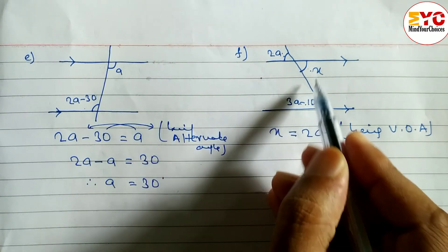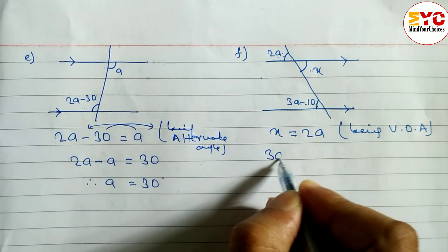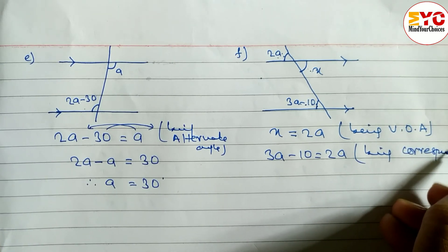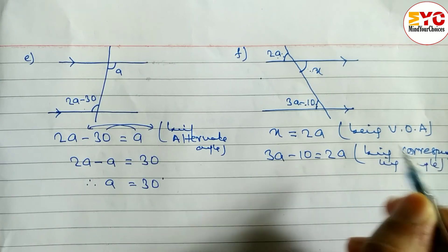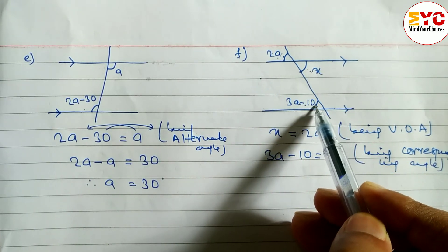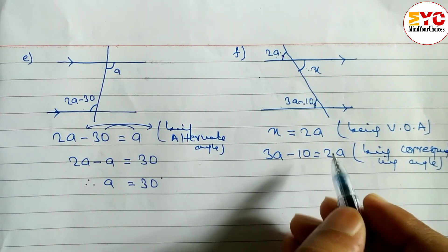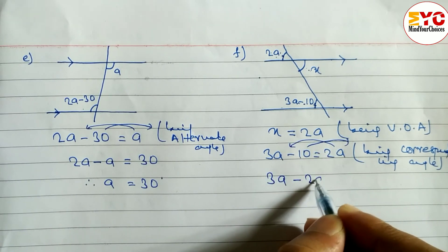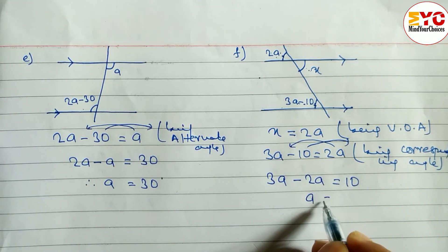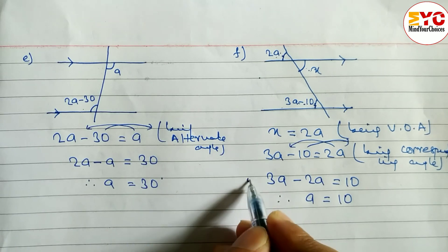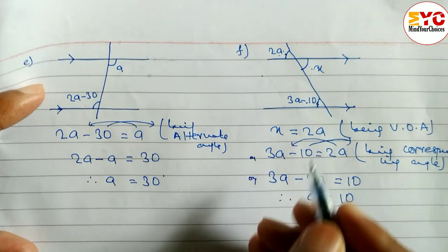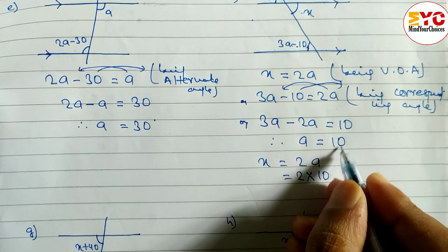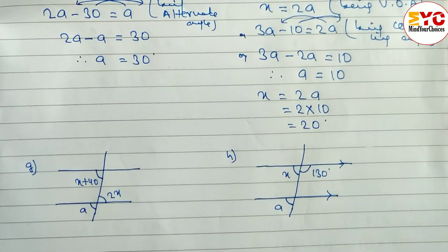For this question, we take these two angles — this and this are corresponding angles, so 3a − 10 = 2a. Reason: being corresponding angles. One angle is outside and one is inside the two parallel lines. Solving: 3a − 2a = 10, so a = 10. Now find x: x = 2a = 2 × 10 = 20 degrees.